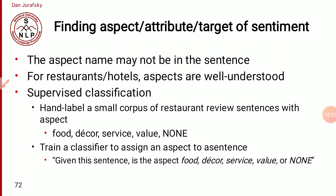The second method for finding aspect attribute targets is supervised classification, where the aspect name may not be directly available in the sentence — sometimes indirect aspects are well understood by context. In this case, we hand-label a small corpus of restaurant review sentences with aspects. As we know, for a restaurant or hotel, the sentiment aspects include food, decor, service, value, and 'none.' These are the typical aspects.